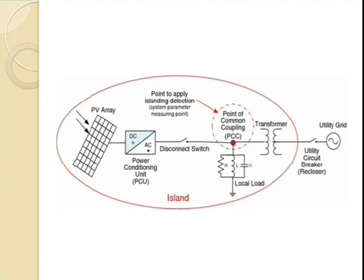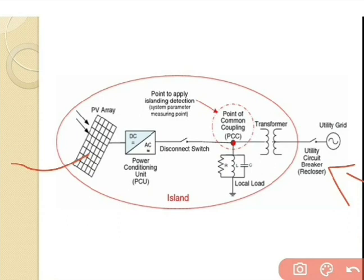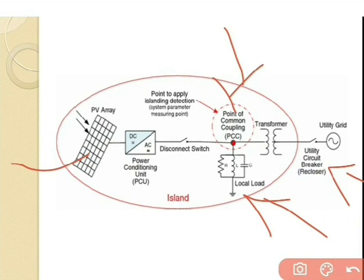Here is an example. This is a distributed generator — or we can say this is the PV array. This is the utility grid, which is used for supplying the load, and here there are different kinds of loads connected. This point is considered as the Point of Common Coupling, that is PCC. Here there is a Power Conditioning Unit, that is PCU. The electricity generated from the PV cell is generated as DC, which is converted to AC, and that AC power is supplied to the load. From the grid side, the supply is also fed to the load side, balancing the loading condition.